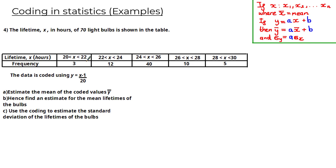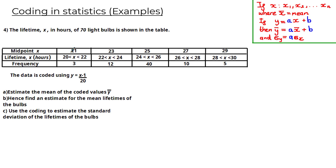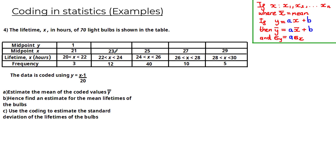Substituting 21 into the coding equation gives (21 − 1) / 20 = 1. Substituting 23 gives (23 − 1) / 20 = 1.1. Substituting the rest of the midpoints gives the following coded values of y. To find the mean of these coded values, we use the formula for the mean of grouped data: ȳ = Σ(f·y) / Σf.